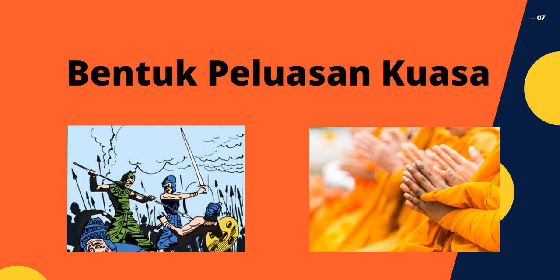Ada dua cara yang digunakan. Satu ialah cara fizikal - maksud bentuk fizikal adalah bentuk peperangan, gunakan perang. Dan satu lagi yang digunakan oleh Tamadun India untuk luaskan kuasa ialah menggunakan agama. Jadi ada dua bentuk: satu bentuk fizikal iaitu peperangan atau serangan, dan satu lagi dalam bentuk penyebaran agama untuk menyebarkan pengaruh tamadun.